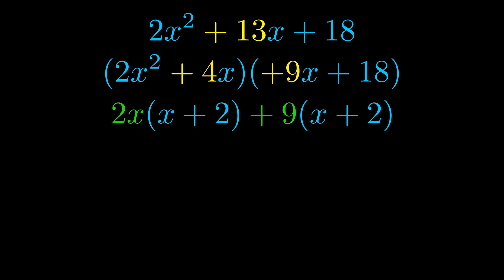Notice also how what remains inside of the parentheses is the same in both cases. The blue values are the same. Those blue values will become one of our factors and we will combine the two green values, the GCFs that we pulled out, to get the other one.